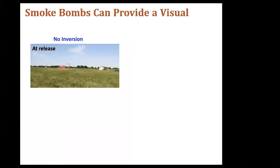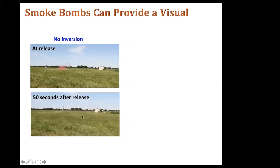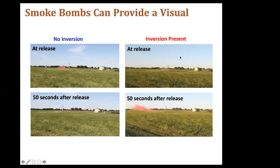Another visualization that can be used are smoke bombs to show this stable air mass. Here's our weather station as a point of reference. We released a smoke bomb in the middle of the afternoon when there was no inversion, and by 50 seconds after release, that smoke bomb had dissipated — you can't see the red cloud anymore. We came back three hours later on the same day when an inversion had formed, and you can see that smoke cloud remained intact 50 seconds after release. Imagine if that was the pesticide you had applied — it would be staying intact.